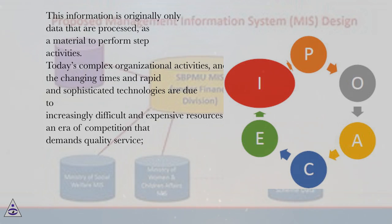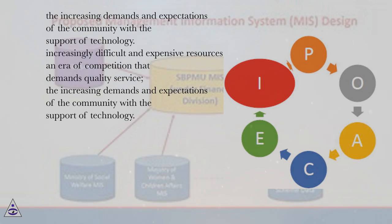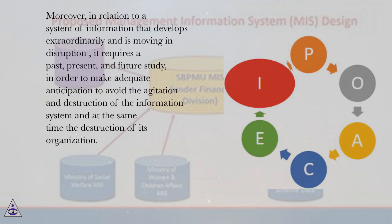Today's complex organizational activities and the changing times in rapid and sophisticated technologies are due to increasingly difficult and expensive resources, an era of competition that demands quality service, and the increasing demands and expectations of the community with the support of technology. Moreover, in relation to a system of information that develops extraordinarily and is moving in disruption, it requires a past, present, and future study, in order to make adequate anticipation to avoid the agitation and destruction of the information system and its organization.